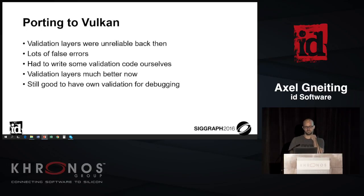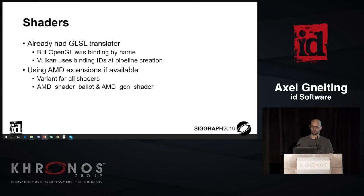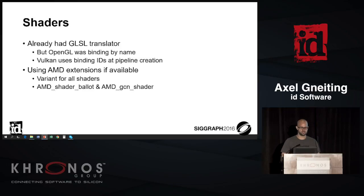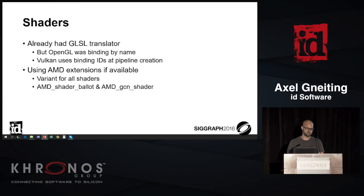But now the validation layers are quite good — I don't think we have any more false positives, so you could just use those. But it's still good to have some own validation stuff because it might be easier for debugging. For the shaders, we already had a GLSL translator for OpenGL. But in OpenGL we were doing binding by name with shader reflection, and Vulkan requires you to use binding IDs, so we had to retrofit this into our GLSL translator.